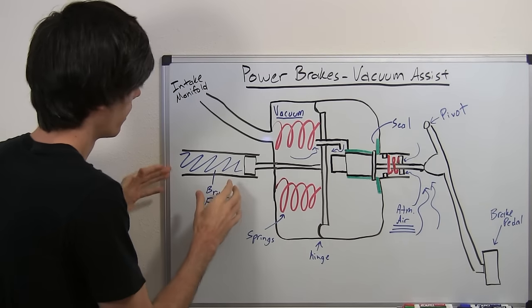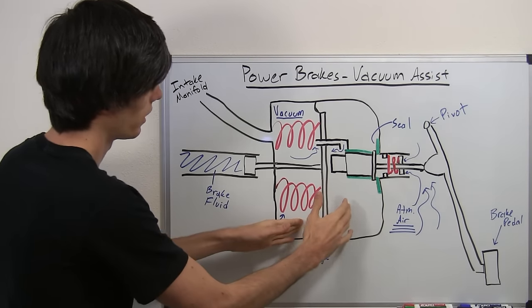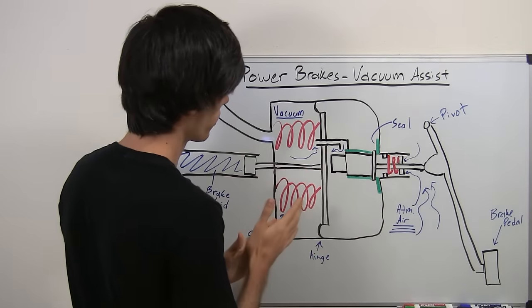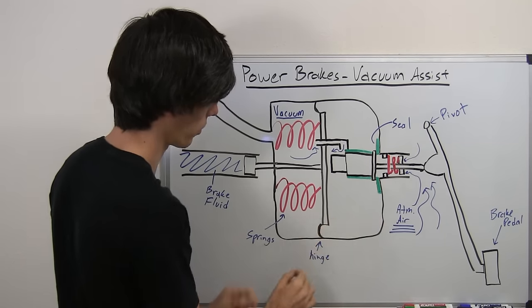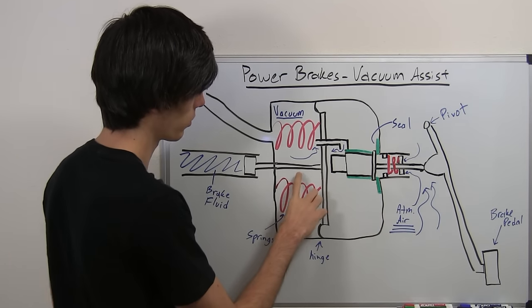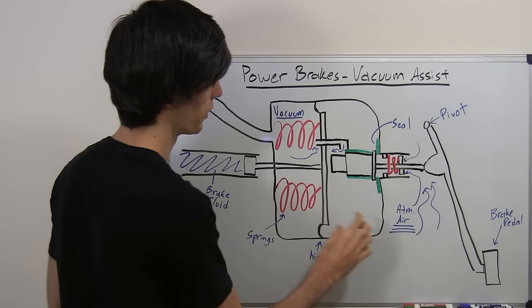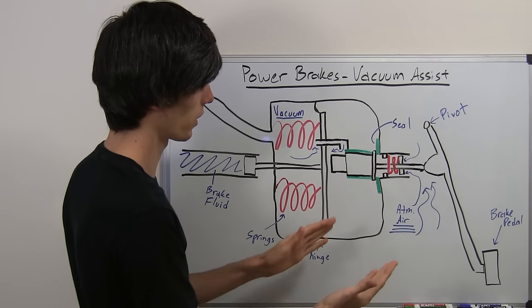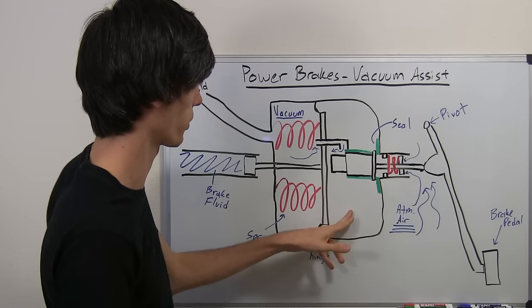So what we've got going on inside of this vacuum assist chamber is we've got two chambers. One on the left side which will pretty much always have a vacuum, and then this chamber on the right side which can either have a vacuum or atmospheric pressure.